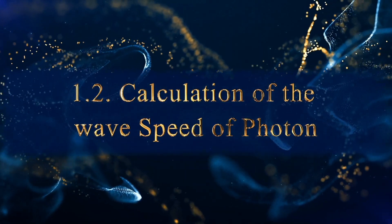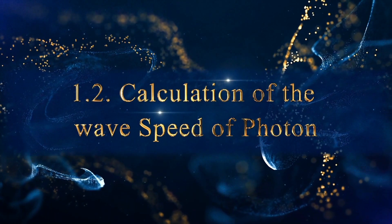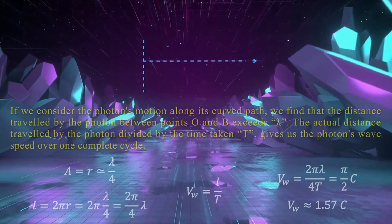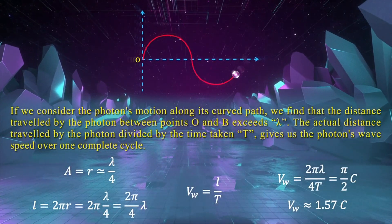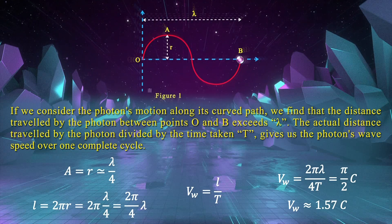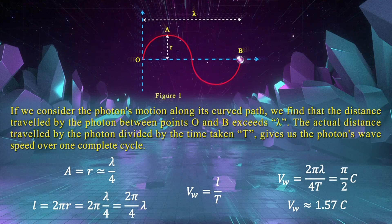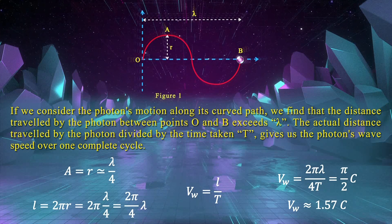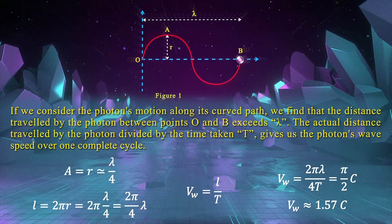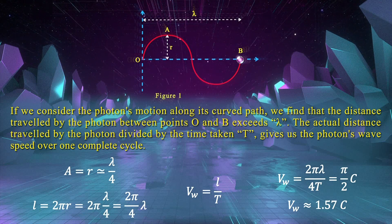Calculation of the wave speed of photon. If we consider the photon's motion along its curved paths, we find that the distance travelled by the photon between points O and B exceeds lambda. The actual distance travelled by the photon divided by the time taken t gives us the photon's wave speed over one complete cycle.